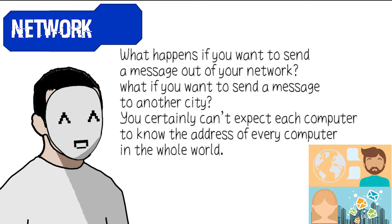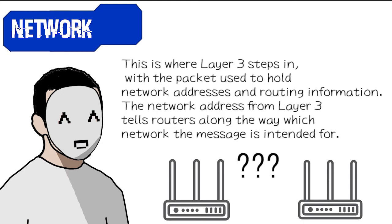The network layer: what happens if you want to send a message out of your network — say, to another city? You certainly can't expect each computer to know the address of every computer in the whole world. This is where layer 3 steps in with the packet, used to hold network addresses and routing information. The network address from layer 3 tells the routers along the way which network the message is intended for.